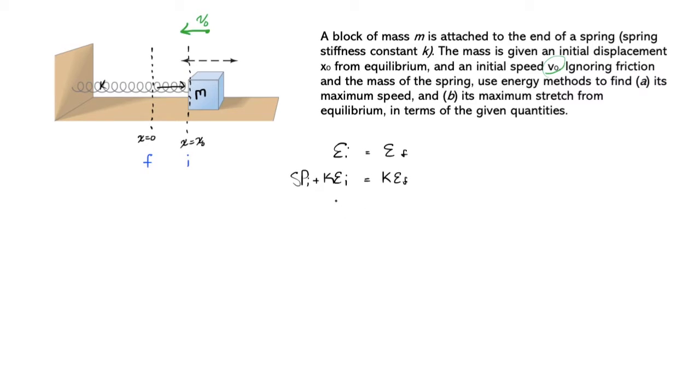Now, let's get specific. We know that the definitions for spring potential are 1/2 kx^2, where k is the spring constant and x is the stretch or compression from equilibrium, and kinetic energy is 1/2 mv^2, where m is your mass and v is your velocity at any point.